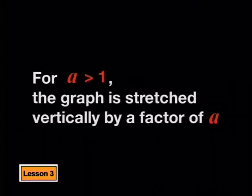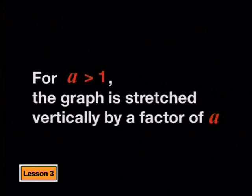We could test another value of a greater than 1, but I will leave that to you. You should find that for any a greater than 1, the a value causes the graph to stretch vertically by a factor of a. Now let's consider an a value that is still positive but less than 1. How will this affect the parent exponential graph? If we use what we have seen with other functions, we should find that the graph shrinks or pulls toward the x-axis vertically by a factor of a.